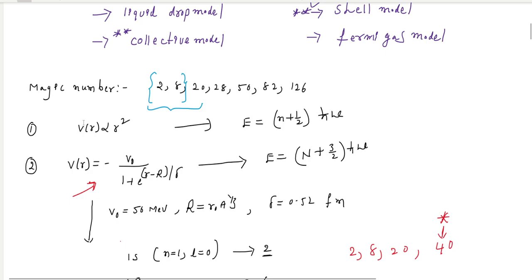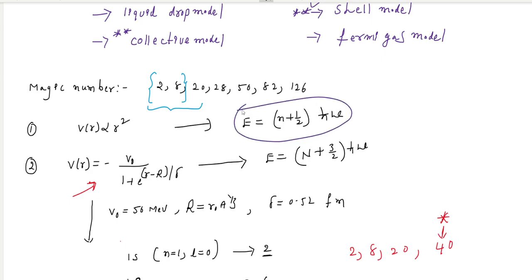Considering the interaction between the proton and neutron, the potential energy is first guessed as a simple harmonic potential. Using this potential, one can get the energy levels. After modifying the potential, they use the Woods-Saxon potential: V(r) = −V₀ / (1 + exp((r − R)/δ)). Using this potential, they try to explain the magic numbers.